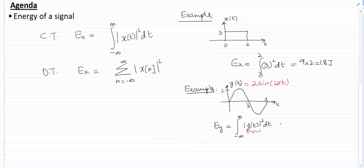So solving this integral, I'll have y(t) which now is 2sin(2πt), and then I have to square it. And the limits from the formula were from minus infinity to infinity, but now because this y(t) is only defined from 0 to 1, we'll have a limit from 0 to 1 to find this Ey.